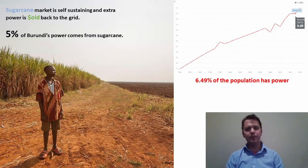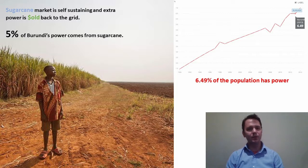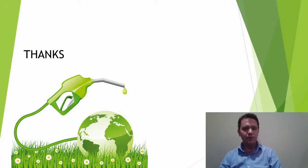Developing more efficient ways of producing ethanol from sugarcane is important for a variety of reasons. The sugarcane market itself is self-sustaining and is even able to sell power back to the grid. 5% of Burundi's power also comes from sugarcane. This is important because only 6.49% of Burundi's entire population has access to power. Developing a better method of producing ethanol from sugarcane is not only important, but lucrative. Thank you all for watching and I hope you enjoyed my video.